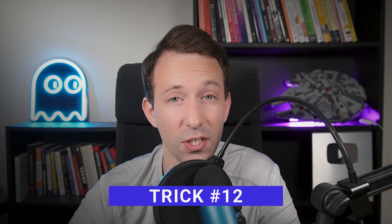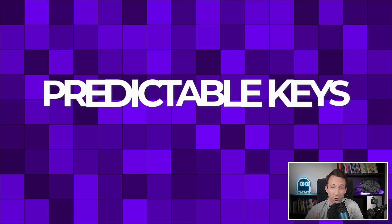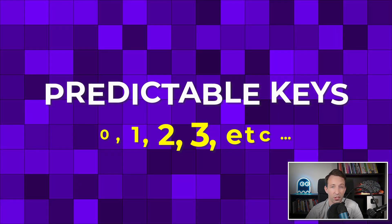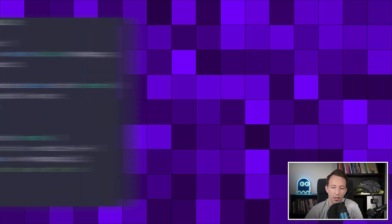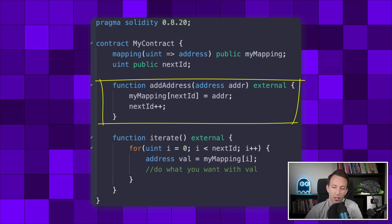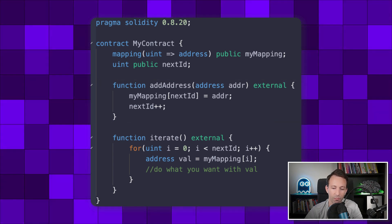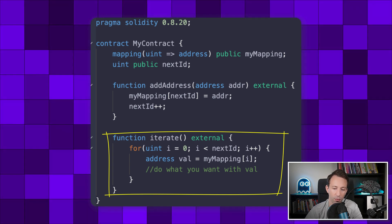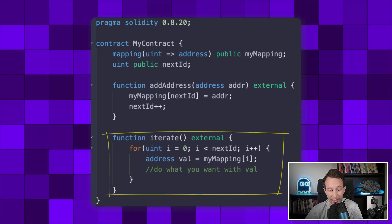The next trick is about iterating over a mapping. In Solidity, you can't do it like in JavaScript. But there is a workaround: choose predictable keys like consecutive integers. Every time you create a new entry, track what the next key is. Then to iterate over the mapping, all you have to do is a for loop that goes between zero and the last key.